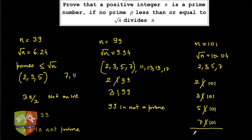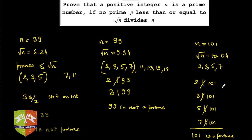Since none of 2, 3, 5, or 7 divide 101, we can declare that 101 is prime. You can verify that no prime factors greater than 7 will divide 101 either, and that's exactly what this question is trying to prove: if none of the prime factors less than root n divide n, then n is certainly a prime number.